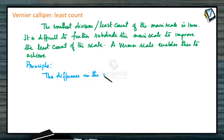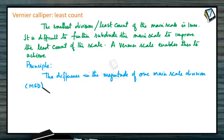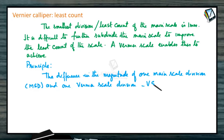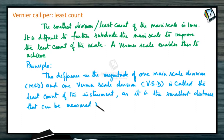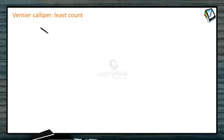A vernier scale is simply a scale attached to the edge of the main scale. The difference in the magnitude of 1 main scale division — called MSD — and 1 vernier scale division — called VSD — is the least count of the instrument, as it is the smallest distance measurable using the instrument.